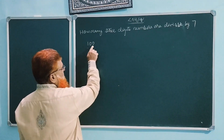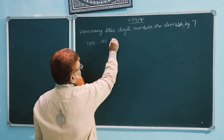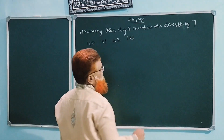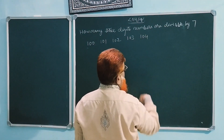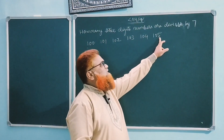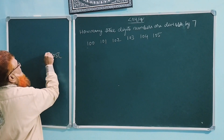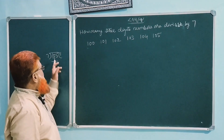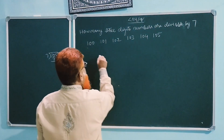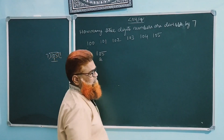Is 100 divisible by 7? No. 101? No. 102? No. 103? No. 104? No. 105? Yes! Because the unit place of this number is 5. When we divide, 7 ones are 7, subtract from 10, we get 3, and 3 and 5 gives 35. Therefore our first 3-digit number divisible by 7 is 105. We say that it is A, the first term.